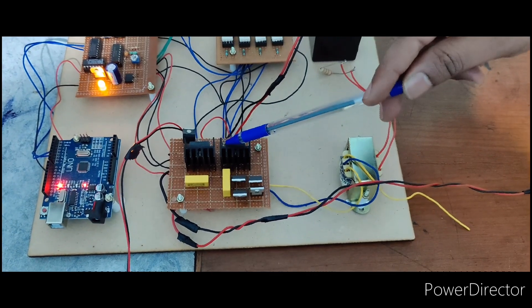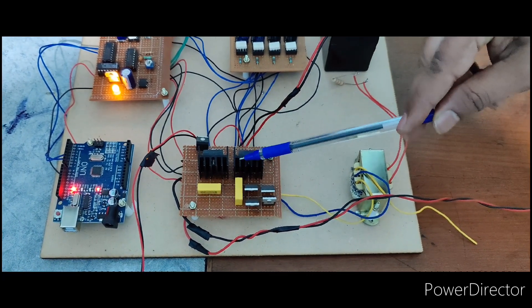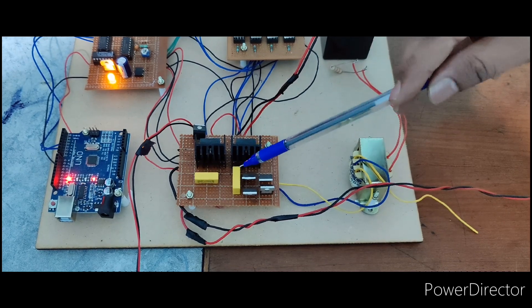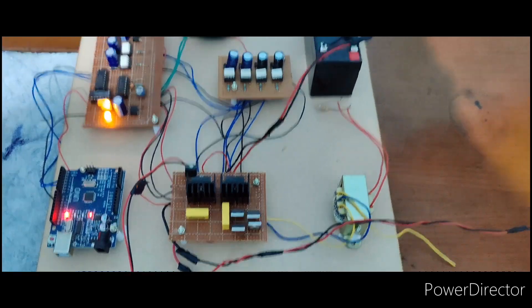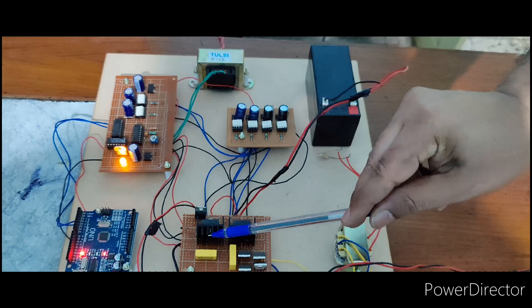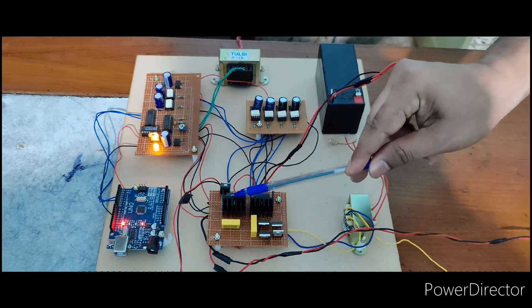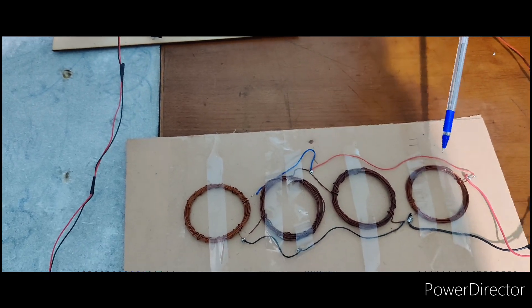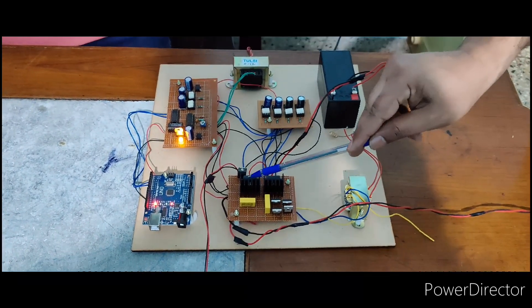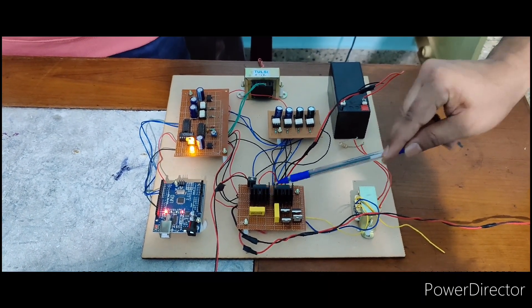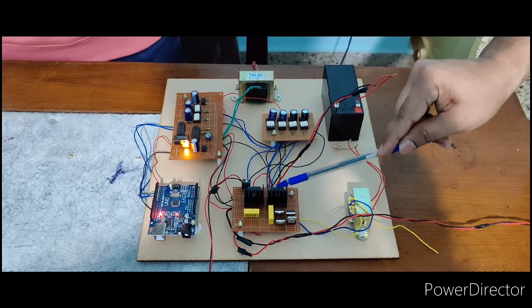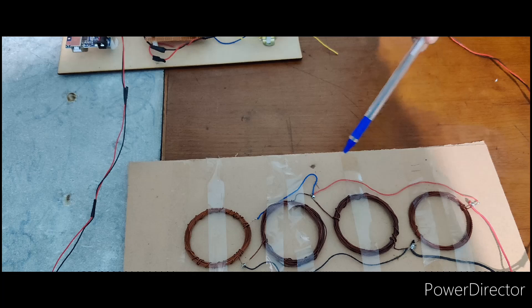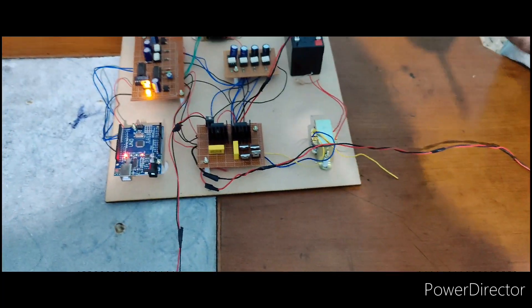Here this one is the converter, full bridge LLC converter, or we can say CLLC - two capacitors we are using. From battery or panel to S1, when S1 is on, it will charge this capacitor plus these transmitter coils. When S1 is off, S2 will be on. When S2 is on, these capacitors will provide energy to the coils, so continuous supply we will get.